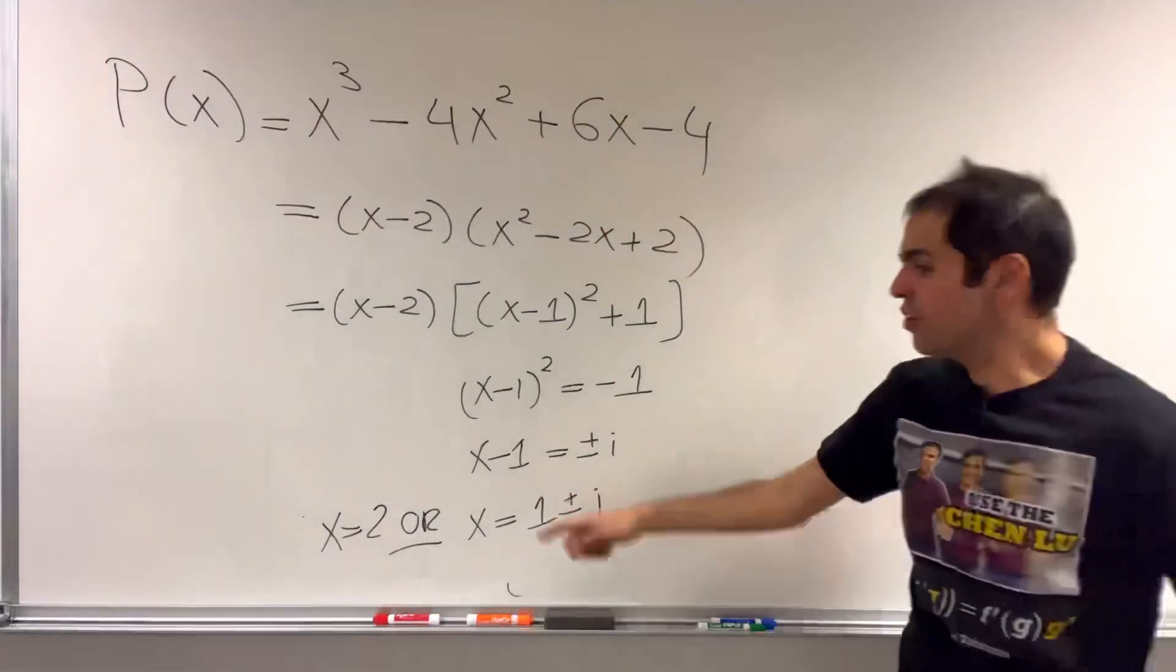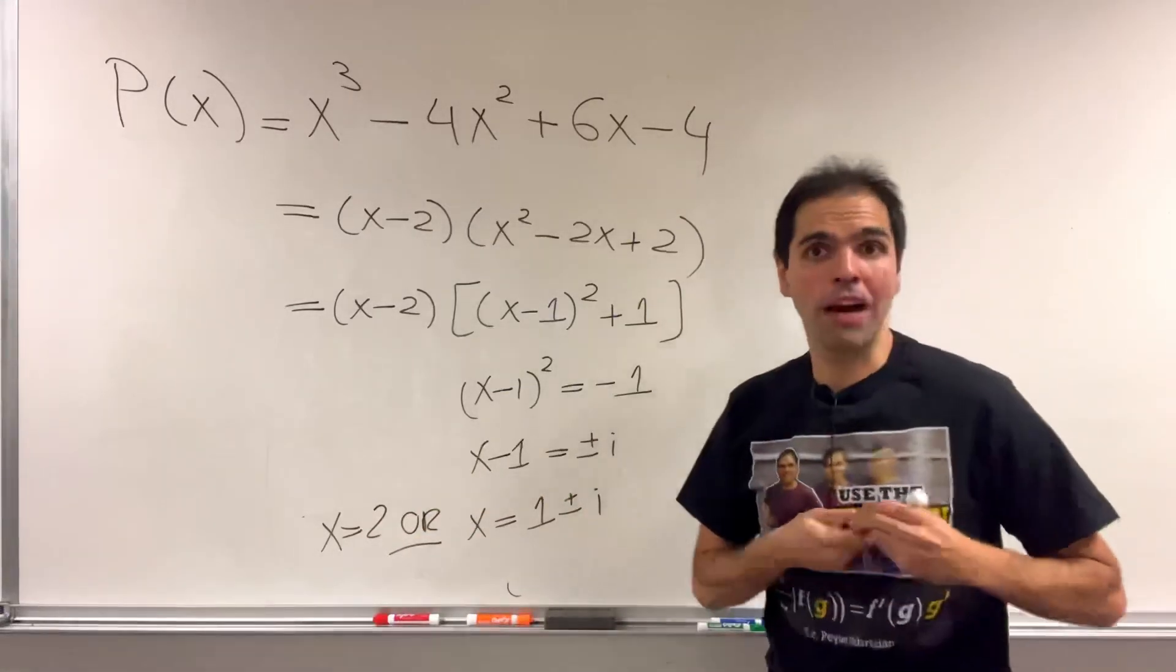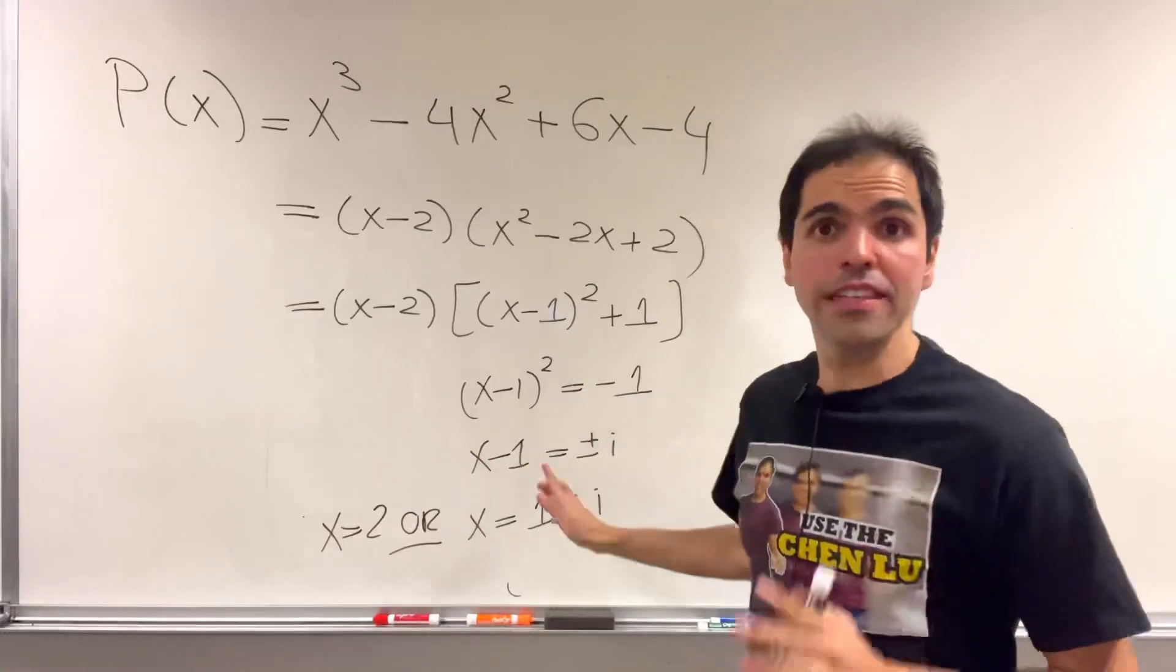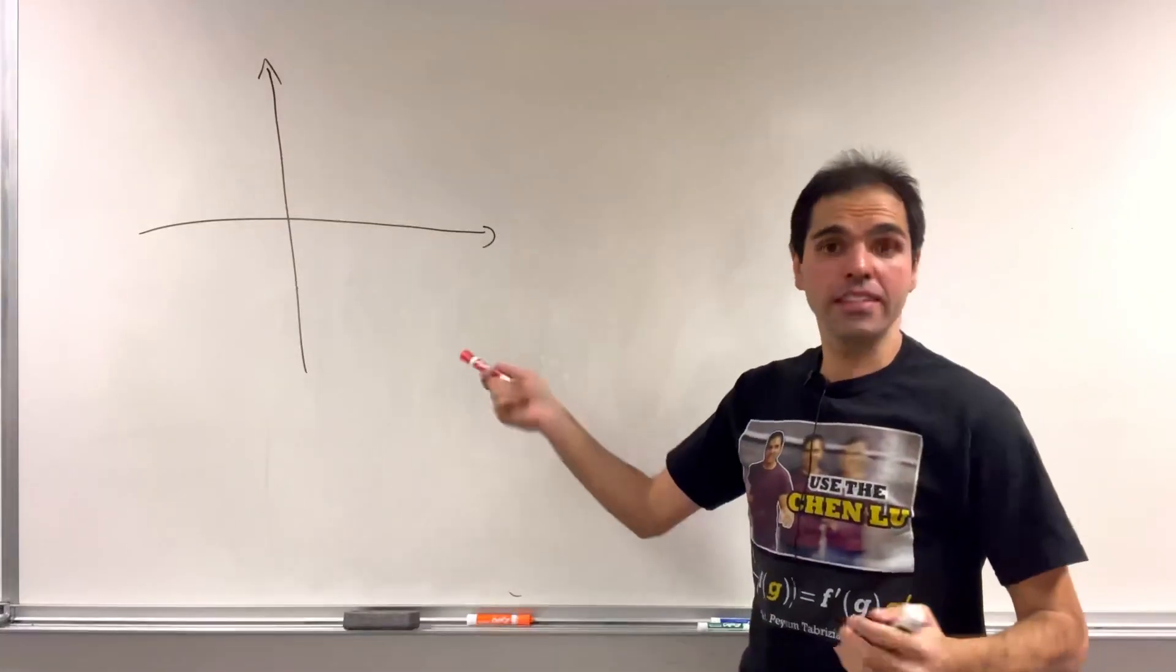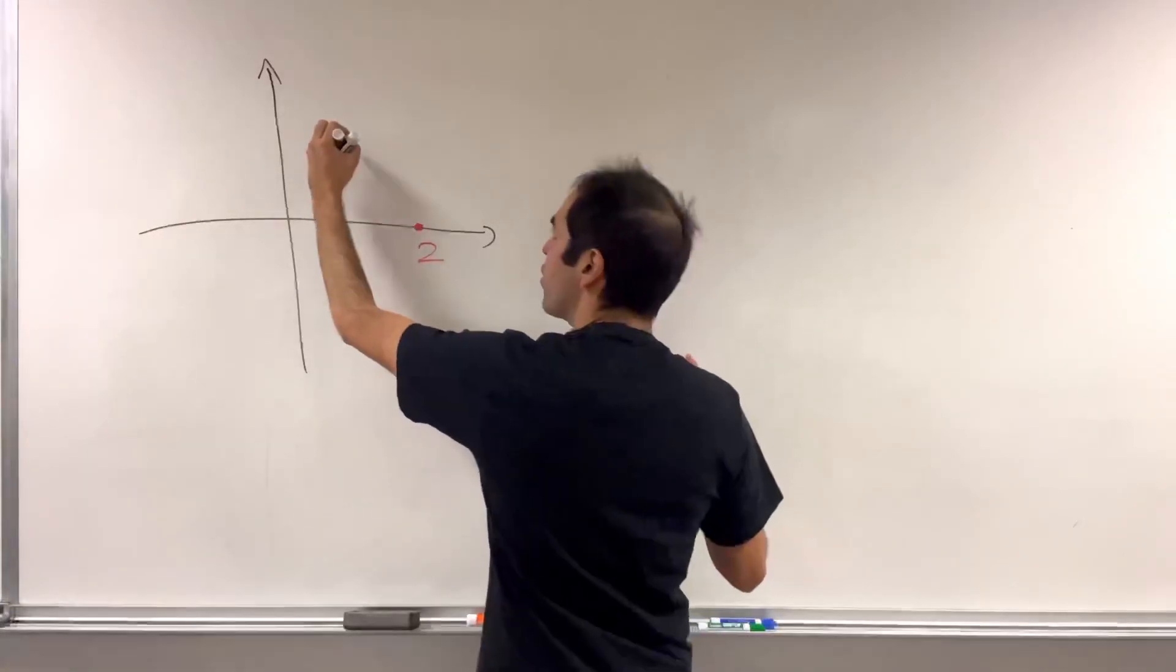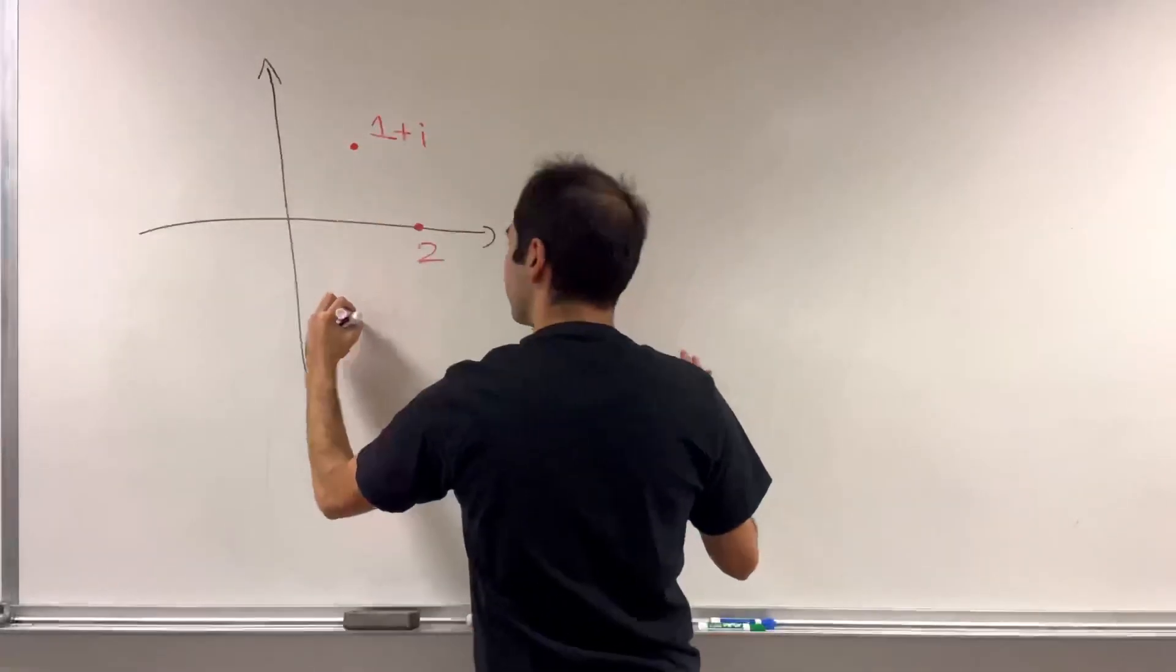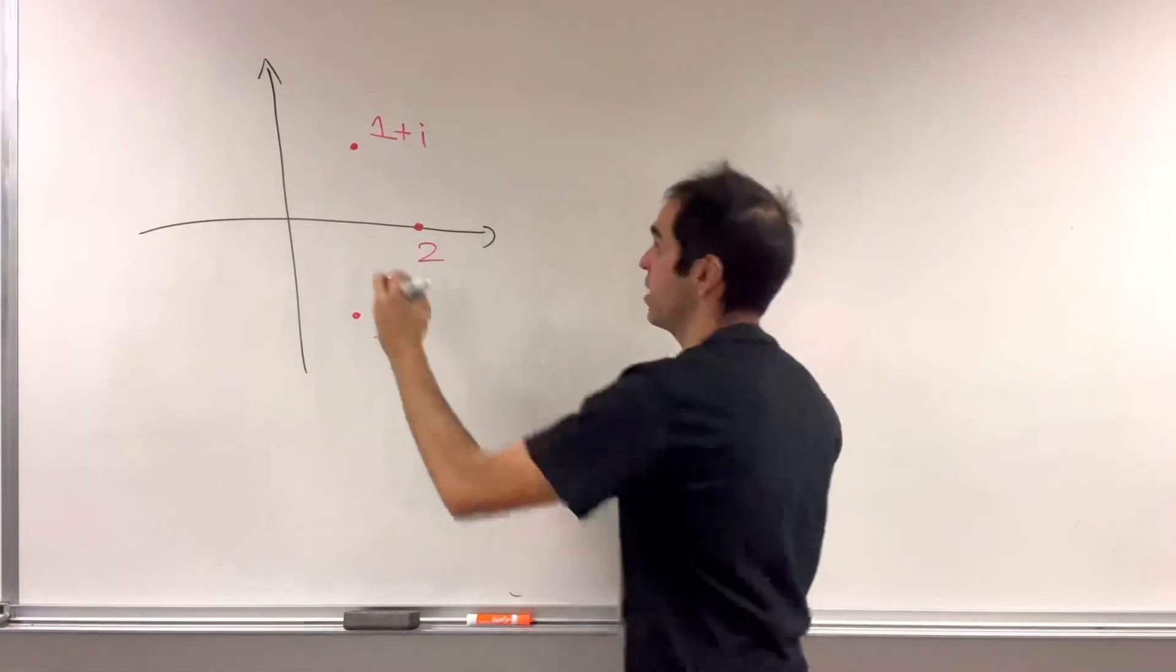So here, this polynomial has three roots: 2, 1 + i, and 1 - i. Why is this important? Because now let's plot the roots geometrically. Because if you look at this on the complex plane, there are three roots. One is the real root, 2. And the other ones are the complex roots, 1 + i and 1 - i. And notice here, they form a triangle.